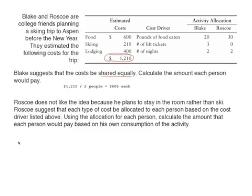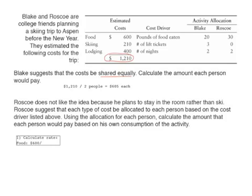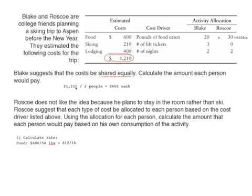The first step in activity based costing is to calculate the rate for each activity. For food, the total cost is $600. Blake anticipates eating 20 pounds of food and Roscoe anticipates eating 30 pounds, for a total of 50 pounds. So the food allocation rate is $600 divided by 50 pounds, which gives us $12 per pound. For each pound eaten, Blake and Roscoe will pay $12 in cost.